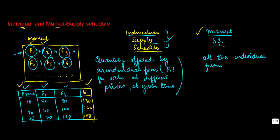Market supply schedule basically gives the quantity offered by all the individual firms for sale at different prices at a given time. Instead of taking an individual firm, we take the total of all firms operating in the market. For simplicity, I've just taken F1 and F2 here—there could be as many as possible.